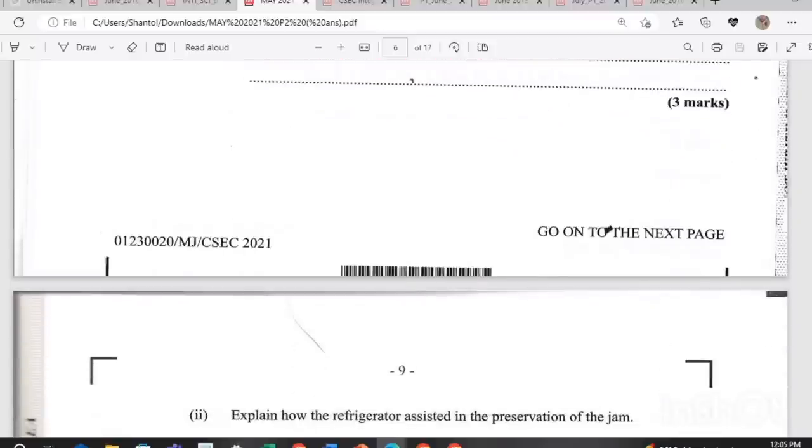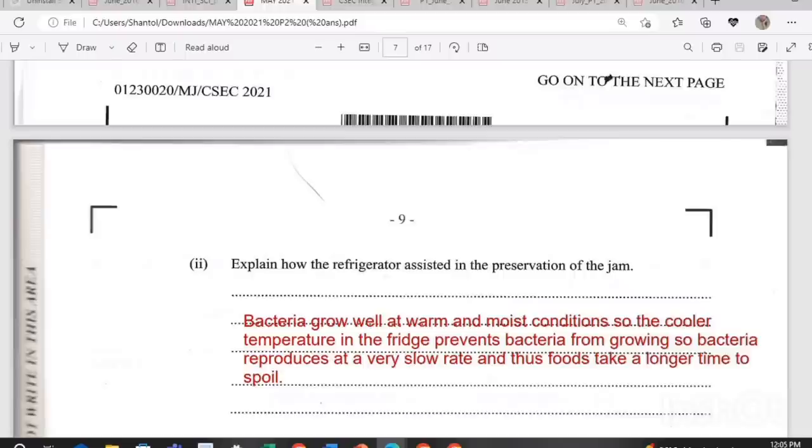This is the process of adding high amounts of sugar that help to remove water from fruits through osmosis. This is so bacteria cannot live in that condition, which prevents foods from spoiling because bacteria needs moisture to reproduce. If you remove that moisture from the fruit, there is no way the bacteria will be able to survive. And the sugar solution would also not be suitable for bacteria. Explain how the refrigerator assisted in the preservation of the jam. Bacteria grows well at warm and moist conditions. So the cooler the temperature in the fridge, it will prevent bacteria from growing. Bacteria reproduces at a very slow rate and thus foods take a longer time to spoil.